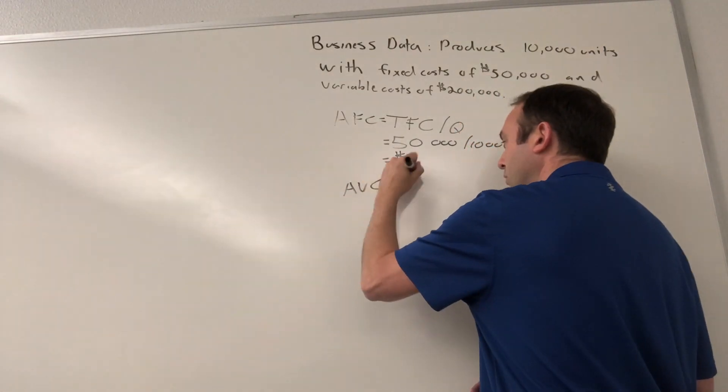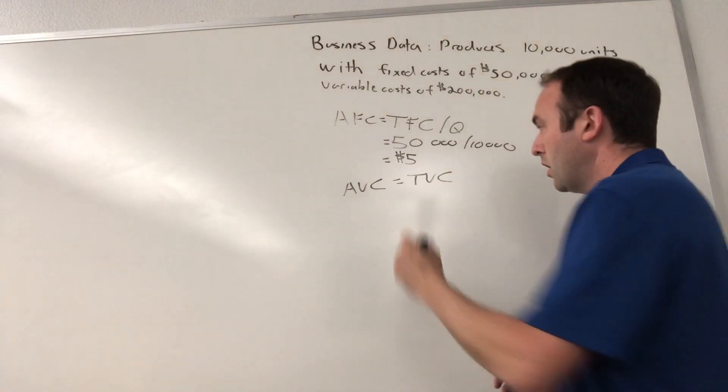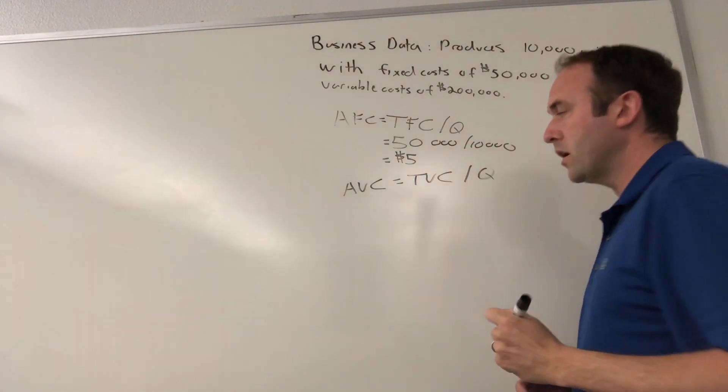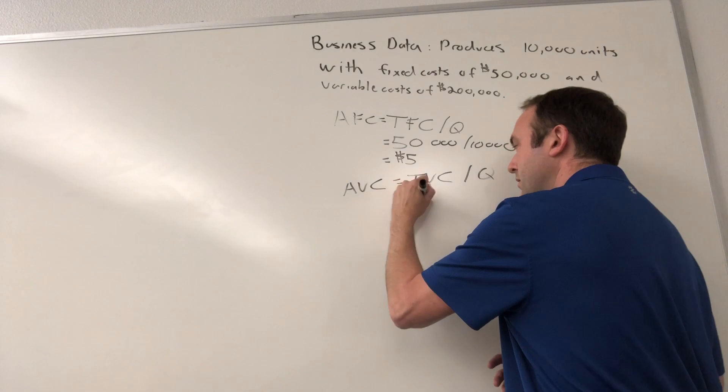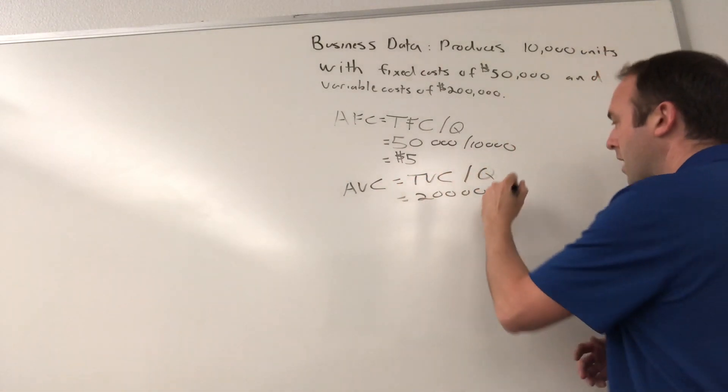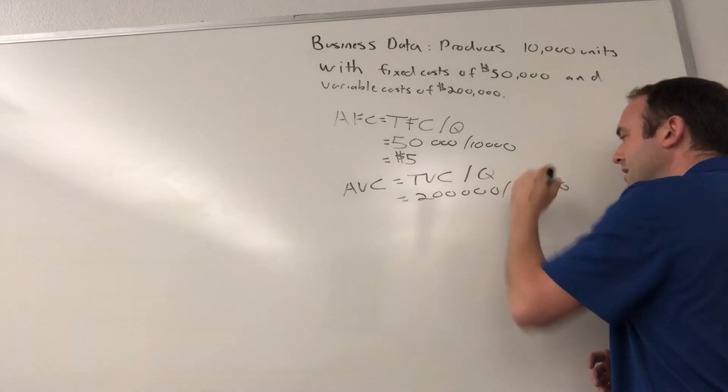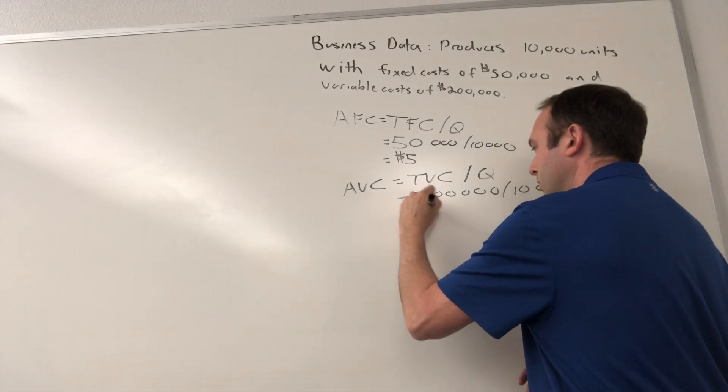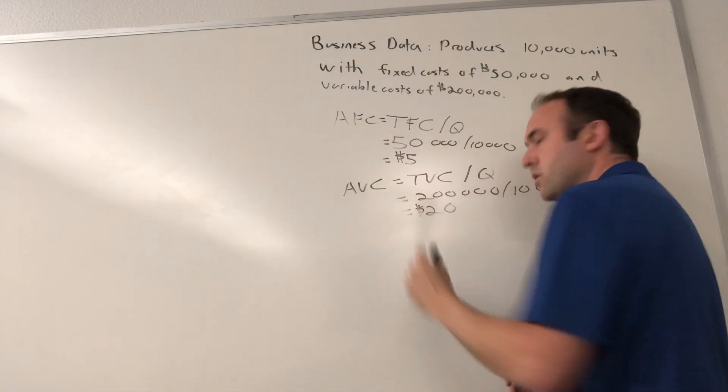AVC equals TVC, total variable cost, divided by quantity. In this data, that is $200,000 divided by 10,000, which will give us $20.